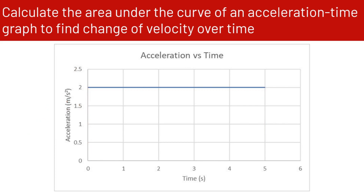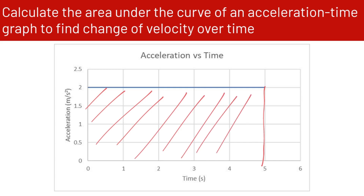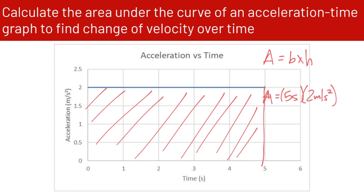Now geometrically, we're finding the area underneath this graph. The area of a rectangle is base times height. Our base is 5 seconds and the height is 2 meters per second squared. So 2 times 5 is 10 — one of the seconds cancels — and we're left with 10 meters per second, which is our velocity change over time.